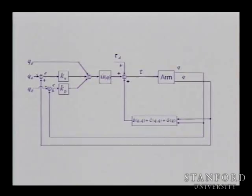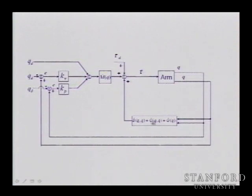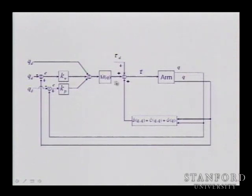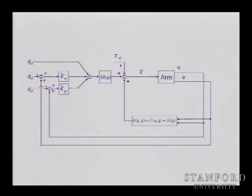The overall control system performs feedback compensating for centrifugal, Coriolis, and gravity forces, then scales the input by M-hat to produce the torque. The torque is M-hat times torque-prime plus the nonlinear estimates. This achieves compensation and decoupling, and the overall behavior of the system will be decoupled.